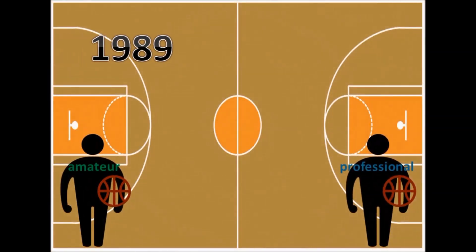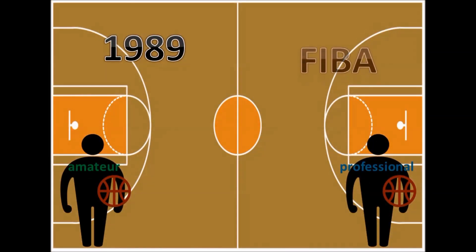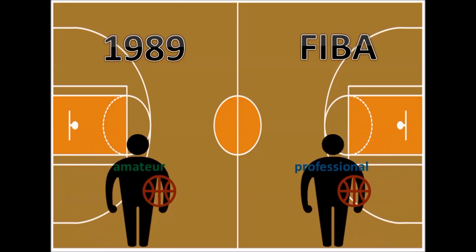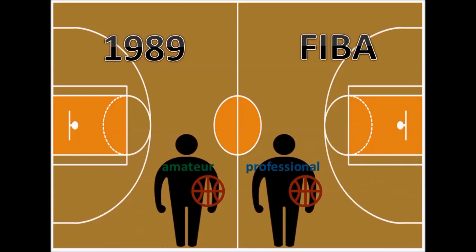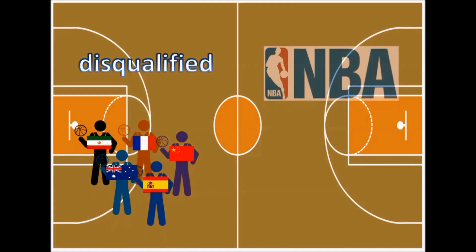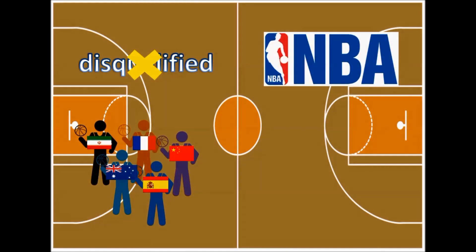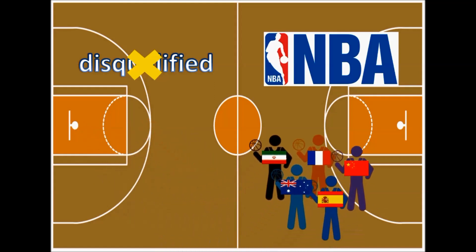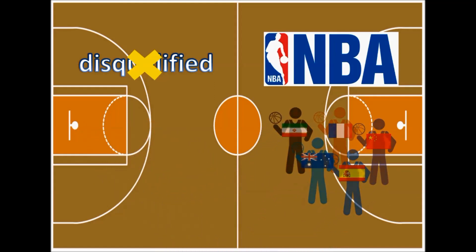First of all, we will start from 1989, when FIBA, the international basketball federation, voted to eliminate the distinction between amateurs and professionals. This ruling meant that international players could play in the NBA without being disqualified from representing their countries in world competitions, and thus started the flow of international players into the NBA.